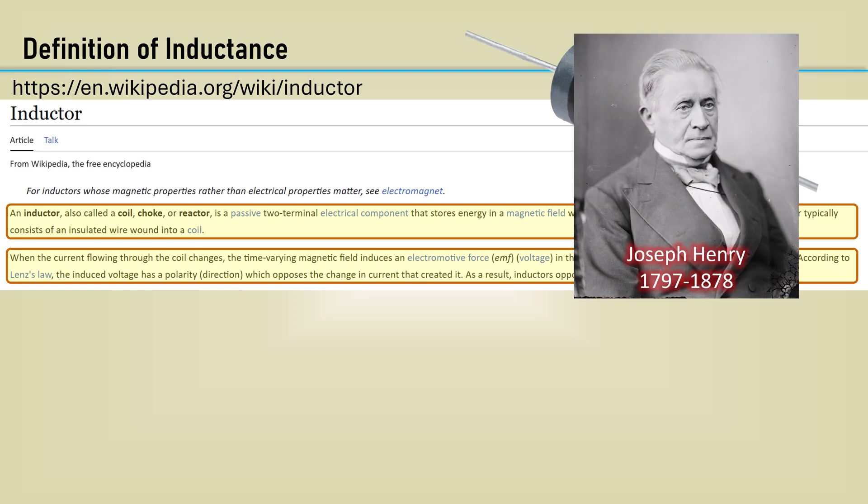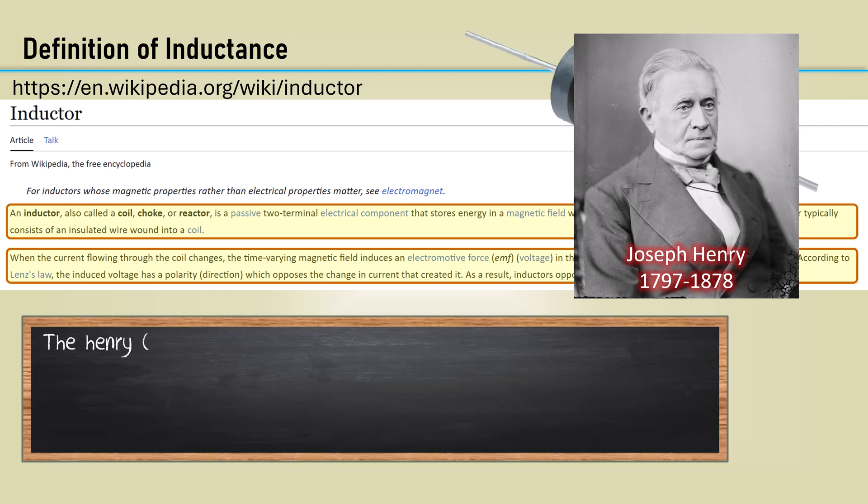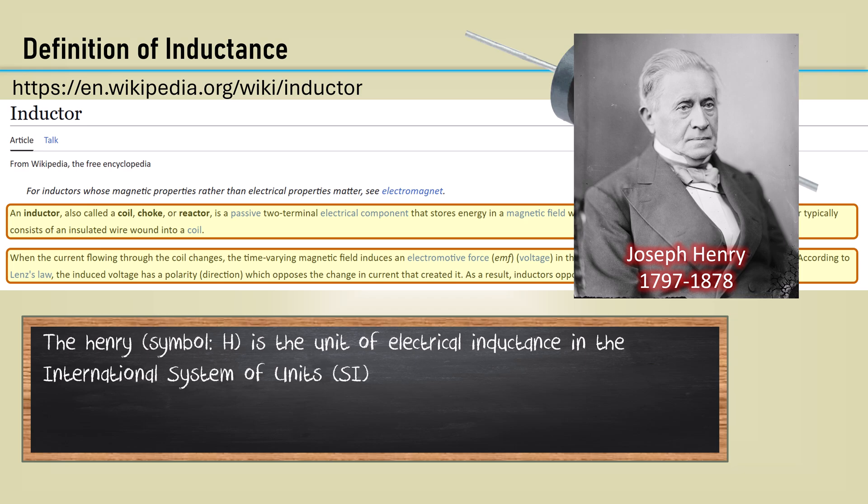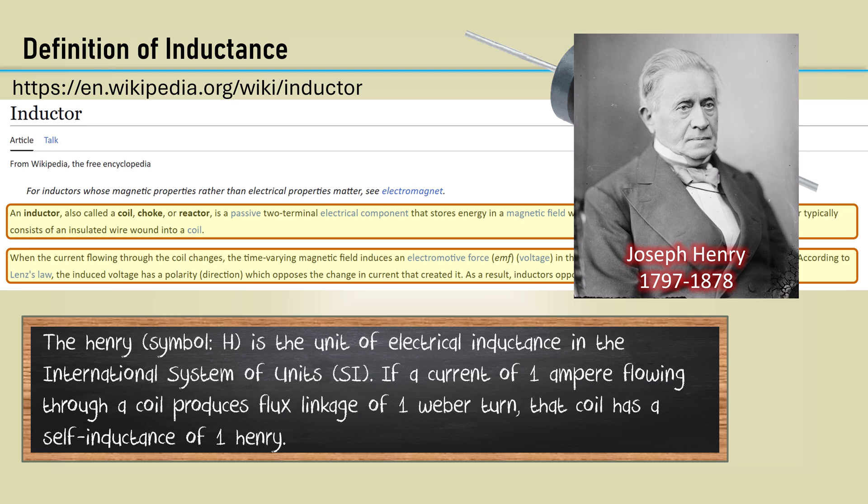Joseph Henry discovered the electromagnetic phenomena, or self-inductance, and the unit of inductance is the Henry named after him. The Henry symbol H is the unit of electrical inductance in the International System of Units. If a current of one ampere flowing through a coil produces a flux linkage of one Weber-turn, that coil has a self-inductance of one Henry. The letter for inductance is L.